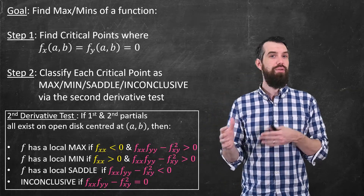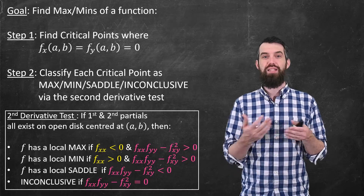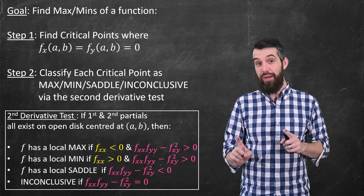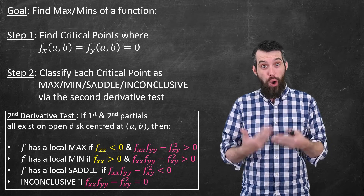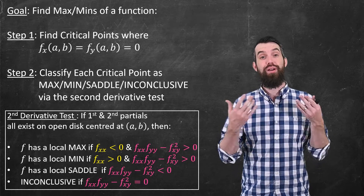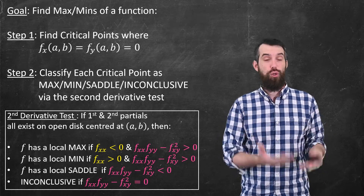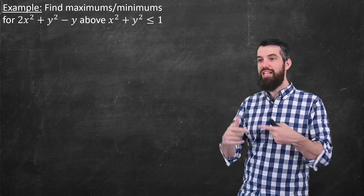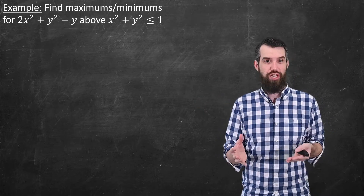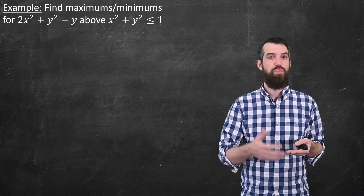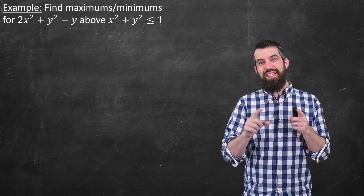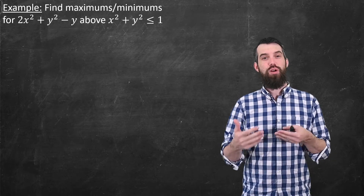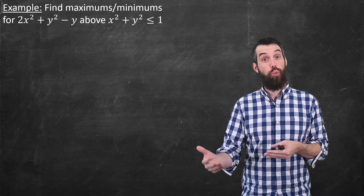That method was great for finding local maxes and local minimums with no other restrictions. But now I want to imagine imposing the restriction that we are in some closed, bounded domain. For example, imagine finding the maximum and minimums of 2x² + y² - y, but with the condition that x² + y² ≤ 1.